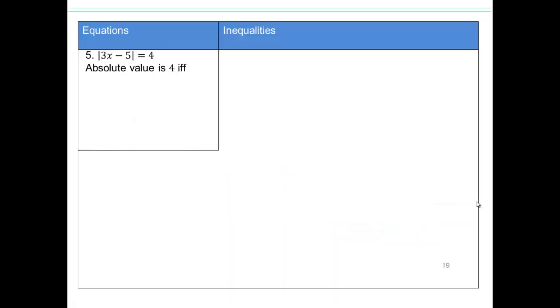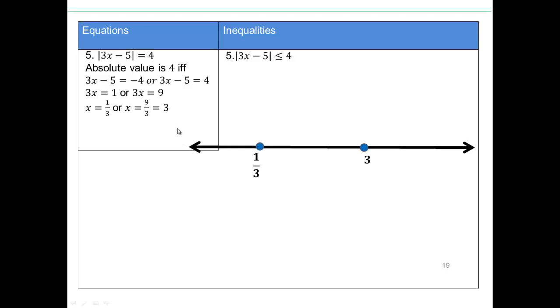All right. So, again, we want absolute value of 4, so 3x minus 5 is going to have to be exactly equal to negative 4 or exactly equal to 4. We solve that, and those are the two solutions we got. Try that inequality on your own now, use method 2. Pause the video here and solve. I'll give you a few moments.